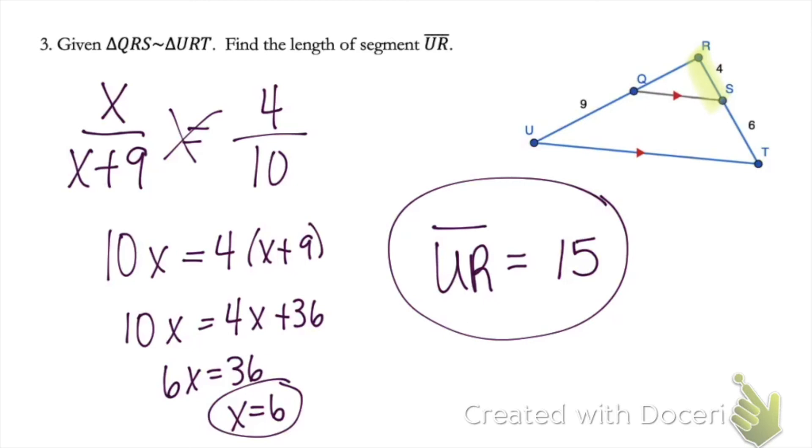In the end, we're going to get UR equals 15. Again, that's because we had to add our X, which was this length, to the nine so that we get the whole side of that triangle.